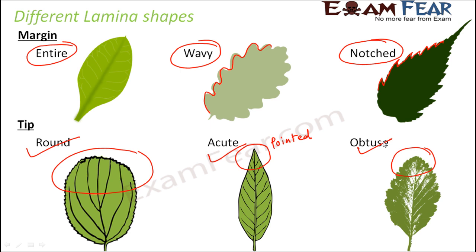For any plant, leaves could have a wavy margin and a pointed tip. For some, leaves could have an entire margin with a round tip — it is a combination of the two. For example, this leaf has an acute tip but an entire margin. This leaf has a round tip but a notched margin. This leaf has an obtuse tip but a notched margin.